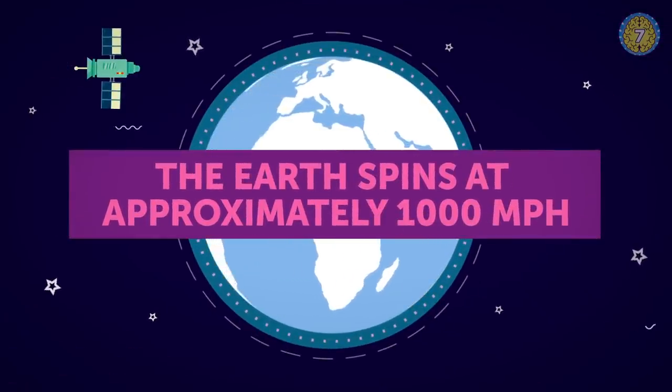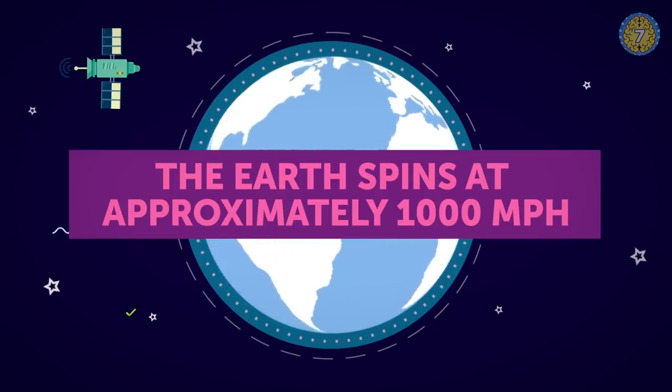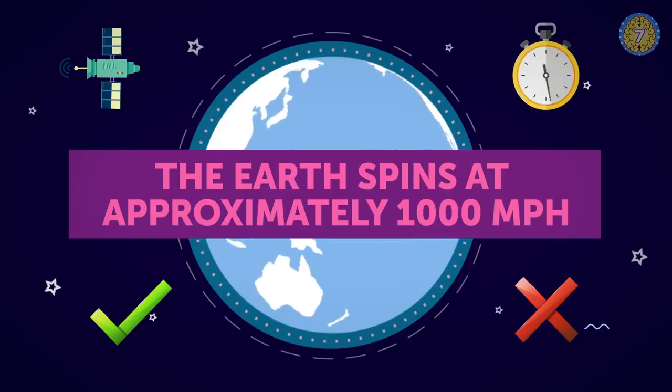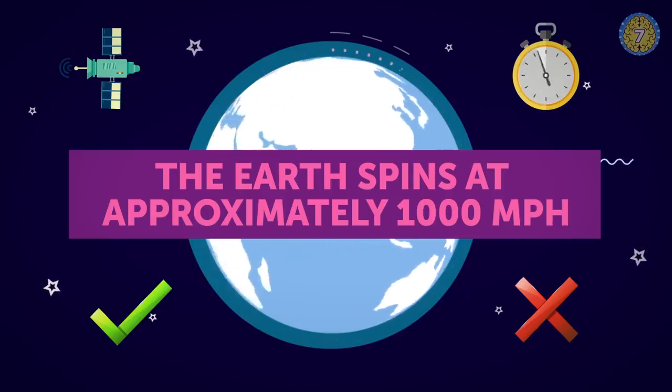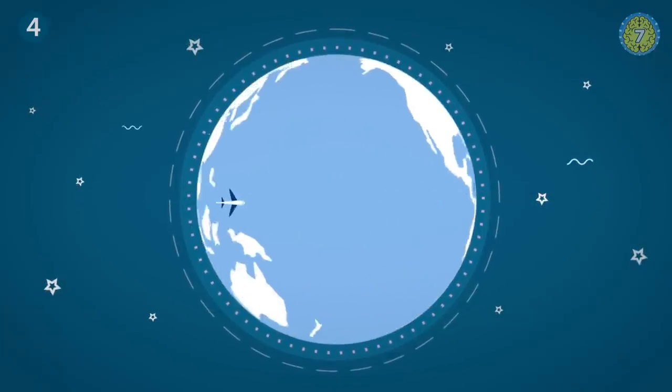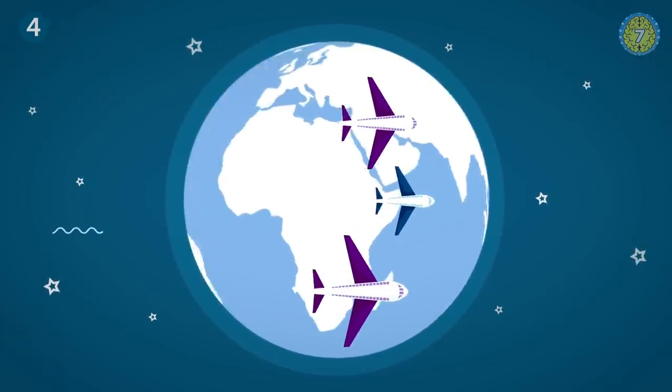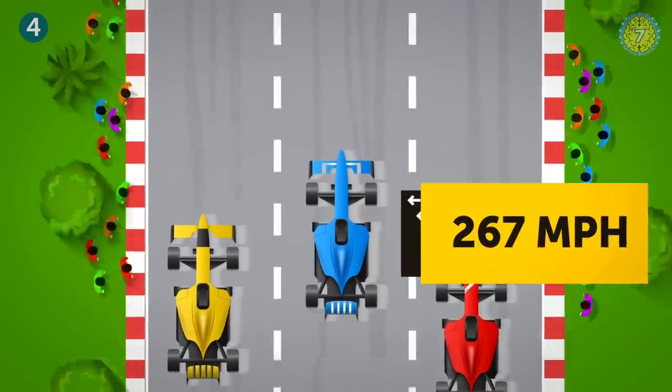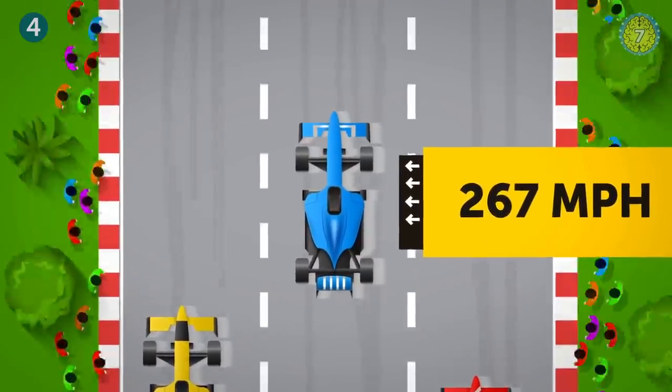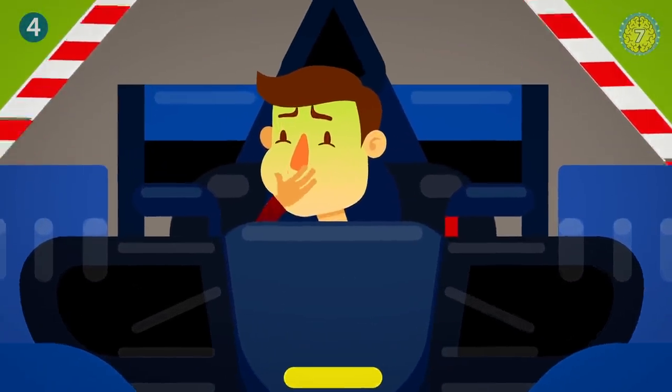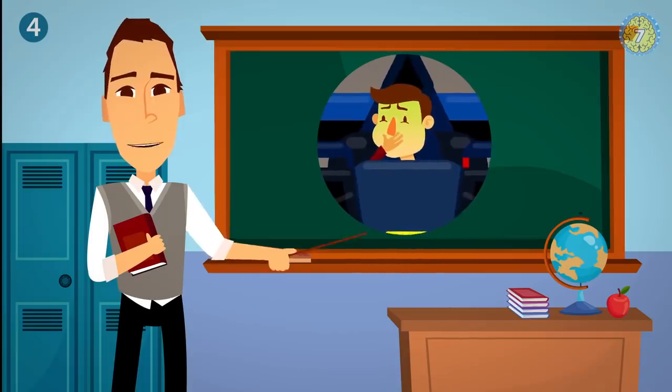The earth spins at approximately 1,000 miles an hour. True or false? And this is true. The earth spins at a crazy speed. Just think about it. The fastest car in the world can reach a speed of 267 miles an hour. Whoa, that's mind-blowing, right? Hey, you feeling nauseous yet? Now you can blame the speed of the earth.